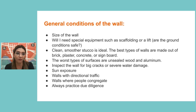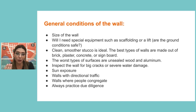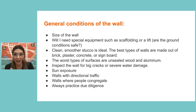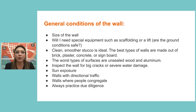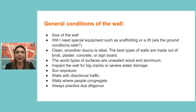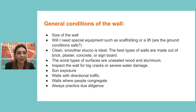First and most importantly: the size of the wall — is it visible? Do you need special equipment such as scaffolding or a lift? Scaffolding and lifts are a big part of the budget, especially if you need them for a long time; renting for a month can cost thousands of dollars. Are the ground conditions safe? The best wall you can think of is a clean, smooth stucco — that is the ideal wall. Best walls are made of brick, plaster, concrete, or signboard. The worst surfaces are unsealed wood and aluminum.